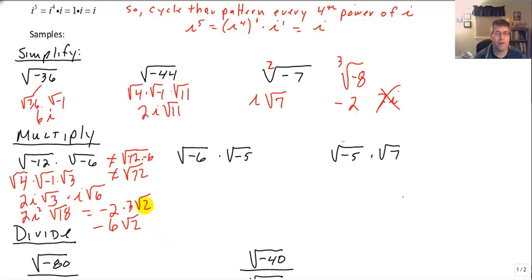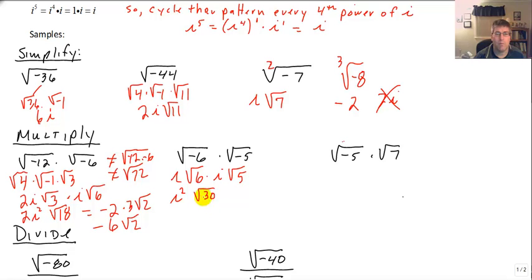Now, the square root of negative 6 times the square root of negative 5 — that's i radical 6 times i radical 5. i times i is i squared, and radical 6 times radical 5 is radical 30. There's no perfect square in 30, and i squared is negative 1, so the result is the opposite of radical 30.